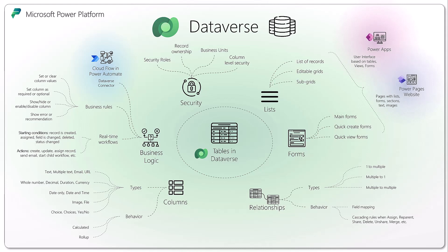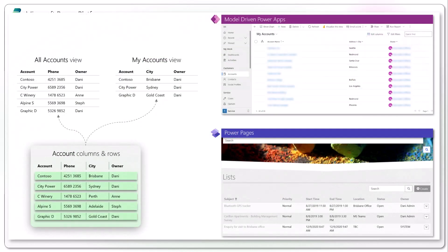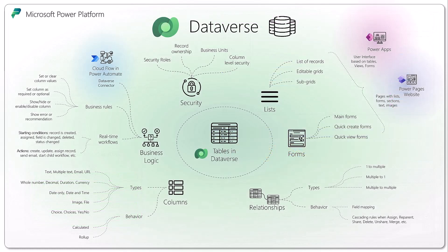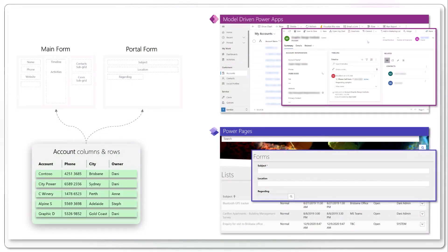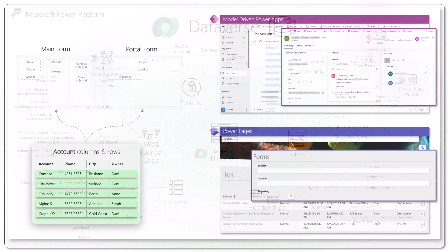Lists and forms are essentially used in your Power Apps. The user interface behind building a model-driven app is dependent mostly on the tables you add into the model-driven app, and then the lists and the forms will form the base of your UI. The same goes for Power Pages — the list of records you want to use in Power Pages, you select from Dataverse, and the layout of the screens and the forms that you want to use on your Power Pages website is effectively built on top of your Dataverse forms.